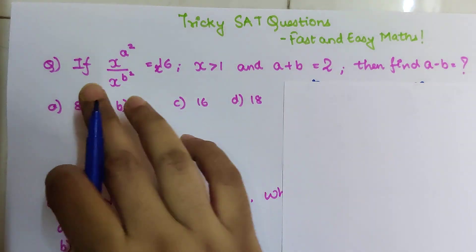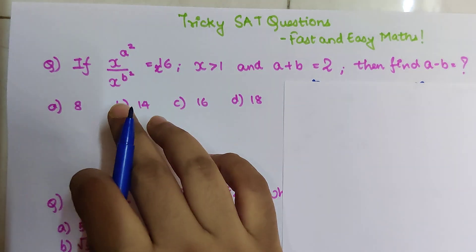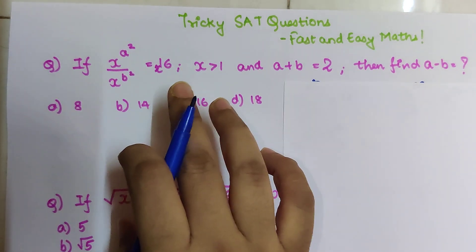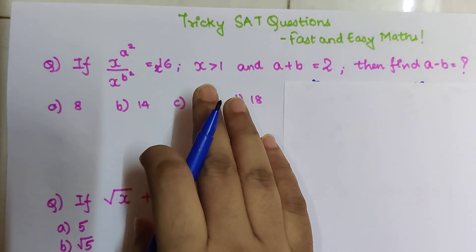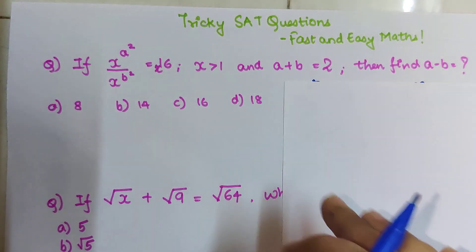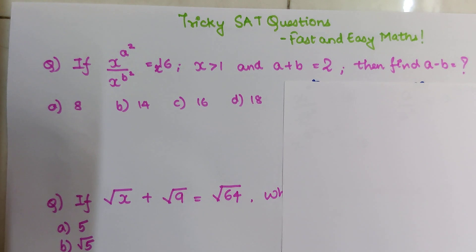The question is: if x raised to a² upon x raised to b² is equal to x raised to 16, and x is greater than 1, and a plus b is equal to 2, then find the value of a minus b. Now, first things first — it's very important that you understand a few concepts before appearing for entrance exams like the SAT.